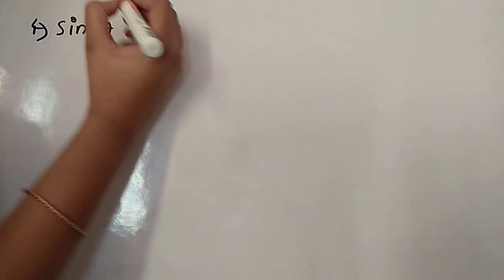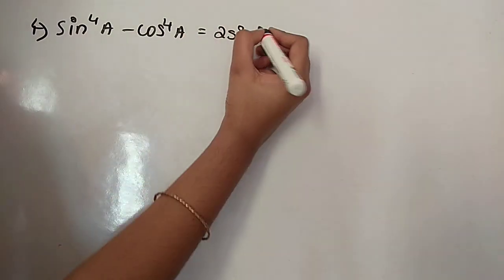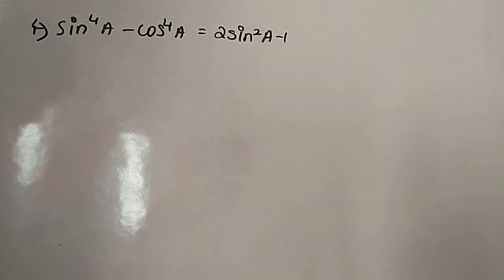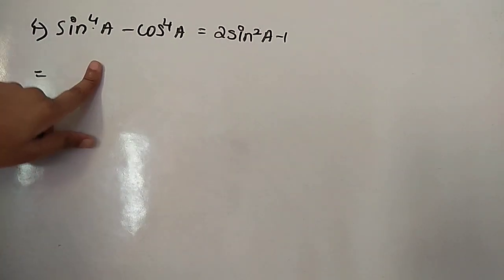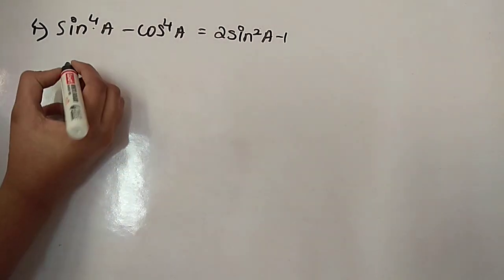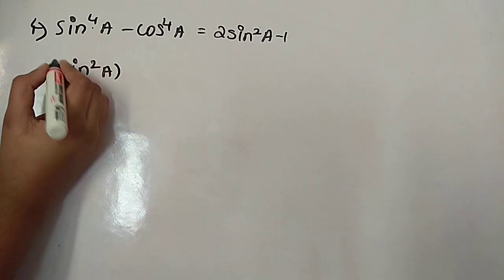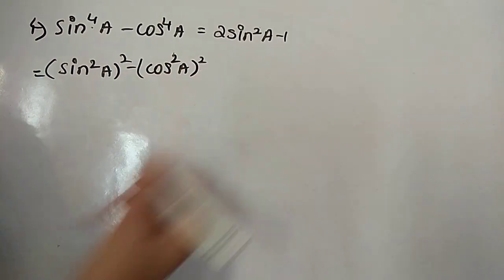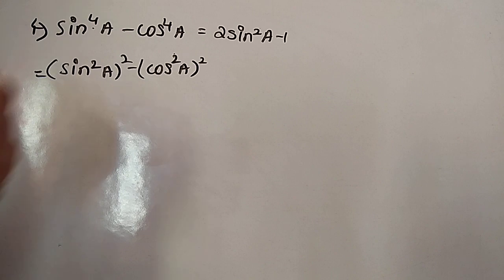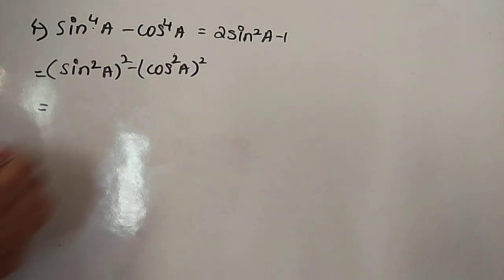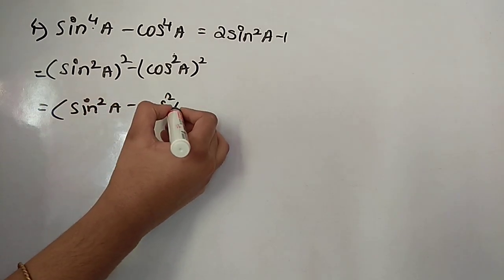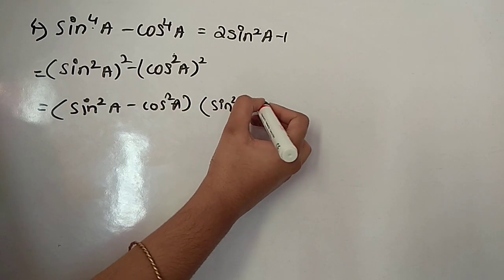Now the fourth question: we have to prove that sin to the power 4a minus cos to the power 4a equals 2 sin squared a minus 1. Taking the LHS, sin power 4a minus cos power 4a can be written as (sin squared a) whole square minus (cos squared a) whole square, which is in the form a squared minus b squared.